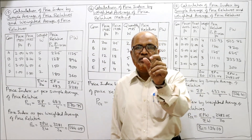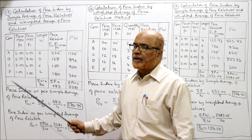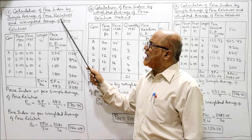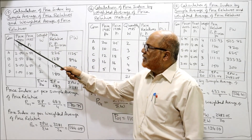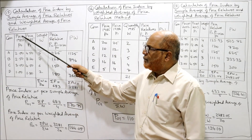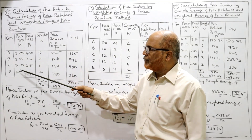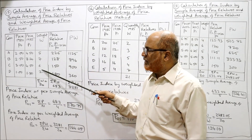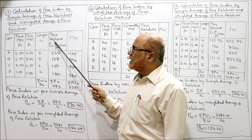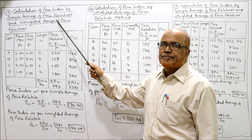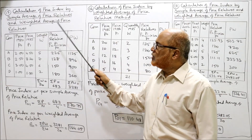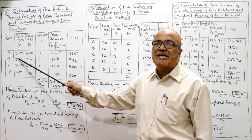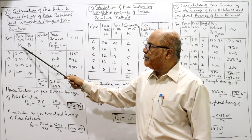We have to apply simple average as well as weighted average of price relatives. Price relative means P1 divided by P0 into 100 for every item. Calculation of price index by simple average of price relatives and weighted average of price relatives. Commodities are given, 1980 base year prices P0, 1985 current year prices P1, and weights are given. Now we are calculating price relative, because the price relative method applies to both simple and weighted. So first we calculate price relative.